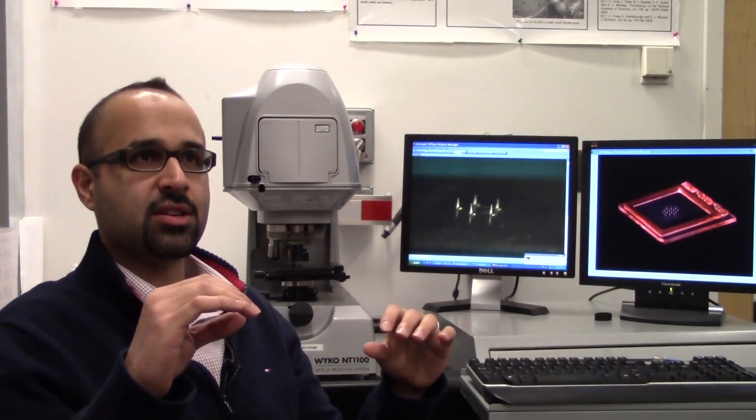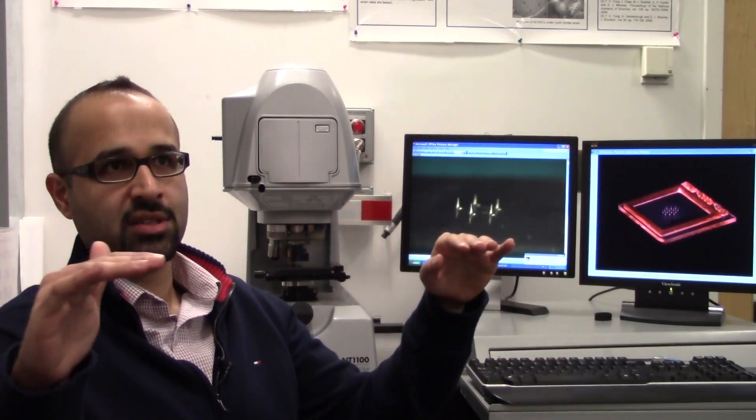In skin we have three layers. The outer layer which is the protective layer of stratum corneum, then we have the viable epidermis and then we have the dermis. So all the blood vessels and the nerves are in the dermis.